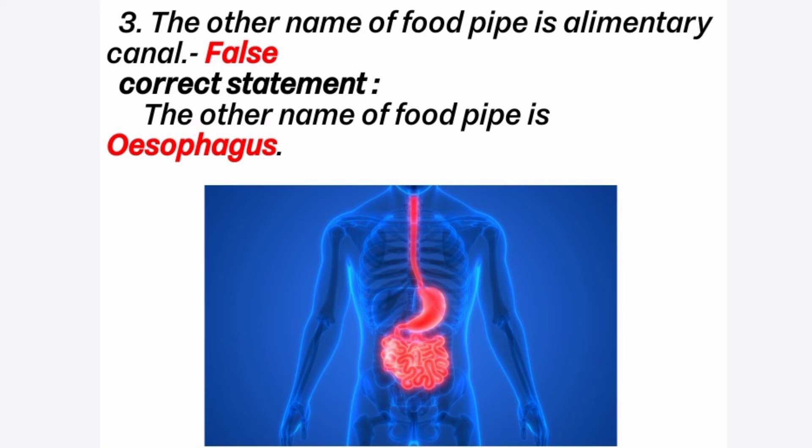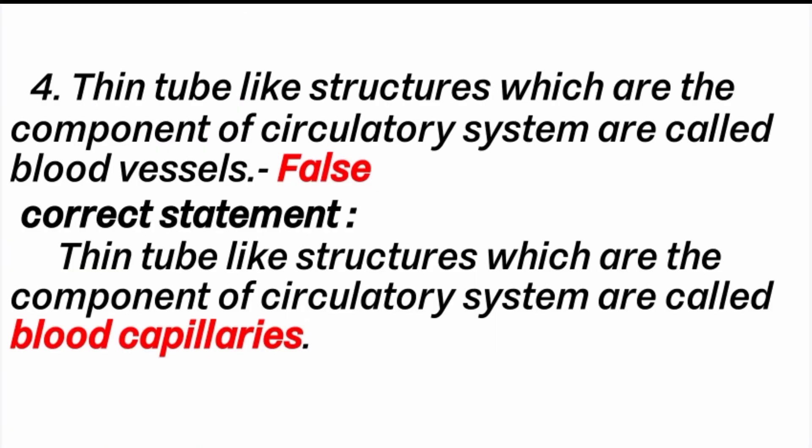Fourth question: thin tube-like structures which are components of the circulatory system are called blood vessels. The answer is false. Correct statement: thin tube-like structures which are components of the circulatory system are called blood capillaries.